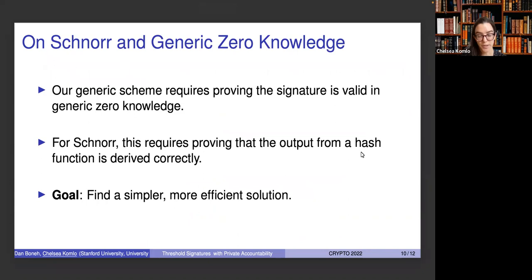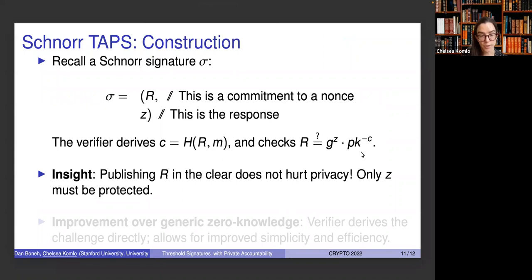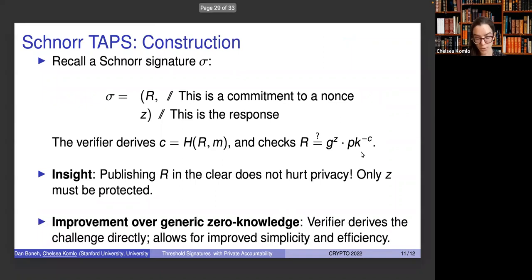We then give a Schnorr construction. We first observe that proving a Schnorr signature is valid in generic zero-knowledge is actually quite expensive, because it requires proving that the output of a hash function is derived correctly. Our insight on the Schnorr TAPS construction is that publishing the Schnorr commitment — which is a commitment to randomness — does not actually hurt privacy, and only the response needs to be protected. This insight allows us to improve over generic zero-knowledge, so in our Schnorr construction the verifier actually derives the challenge directly, resulting in a simpler zero-knowledge statement and something more efficient.